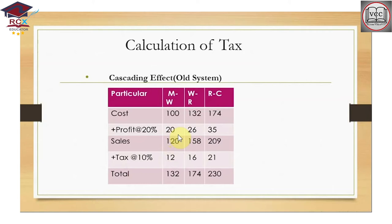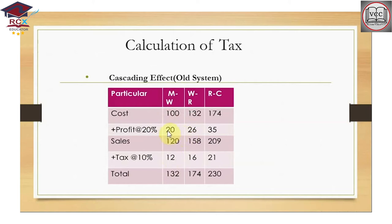Then the GST Act — or in the old system, excise/VAT — applied. A 10% tax on 120 gives 12. So the manufacturer charges 132 to the wholesaler. The total cost for the wholesaler is 132.